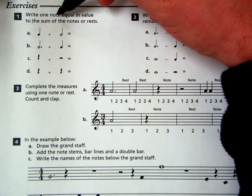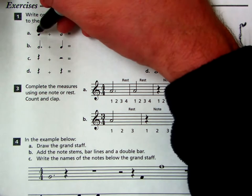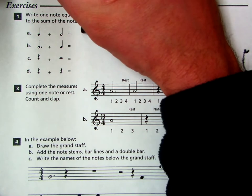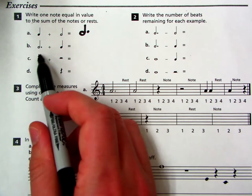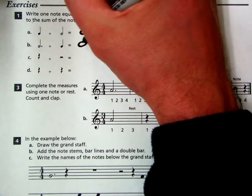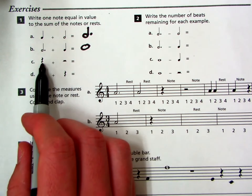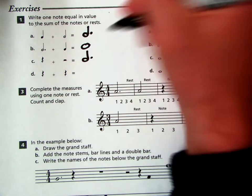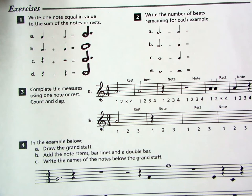Alright. Exercise one. Write one note equal in value to the sum of the notes or rests. So we have a quarter note worth one, plus a half note. That's three. And then we want to write one note that equals three. So we know now that that would be a dotted half note. Okay. We have a dotted half note plus a quarter note. So three plus one. That would be a whole note. Alright. Four. Okay. And we want a note that's equal to one plus two. So that's three. Again, it's a dotted half note. And then one plus one. That's two. So we'd have a half note.